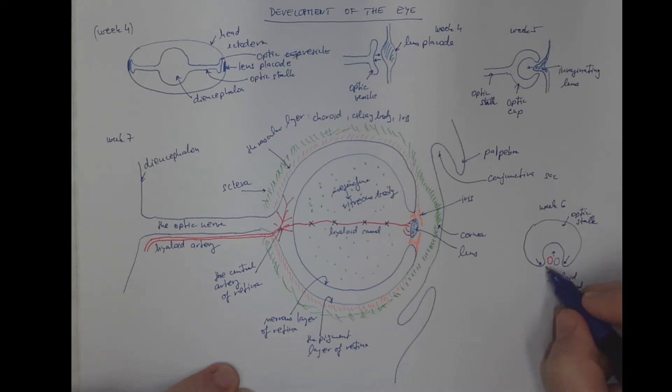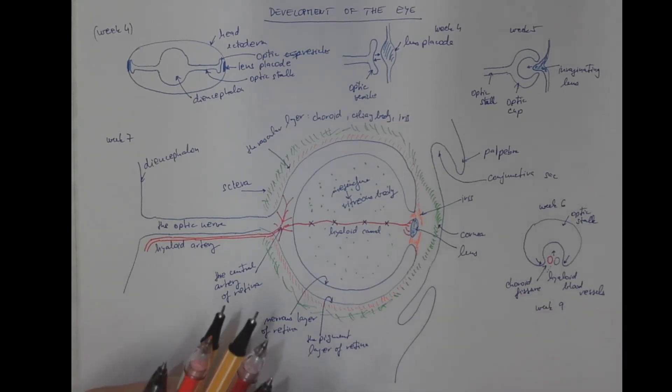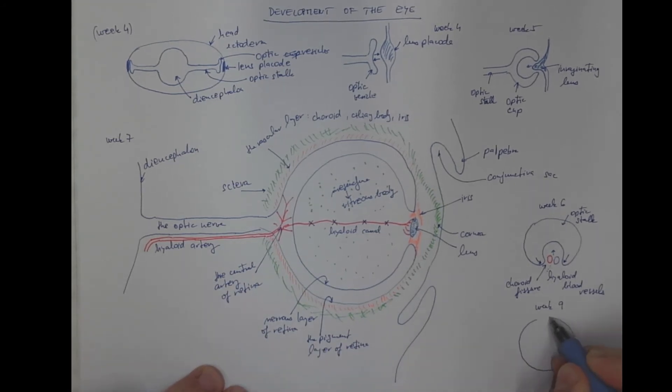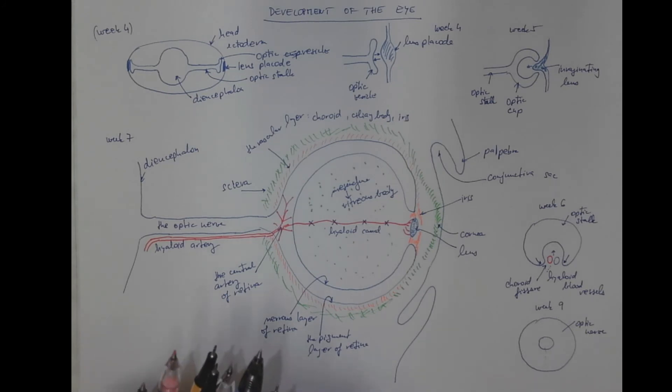This fissure is called the choroid fissure, which is supposed to be closed in week nine. So the optic nerve, which comes from the optic stalk, contains the central artery of retina and the accompanying vein.